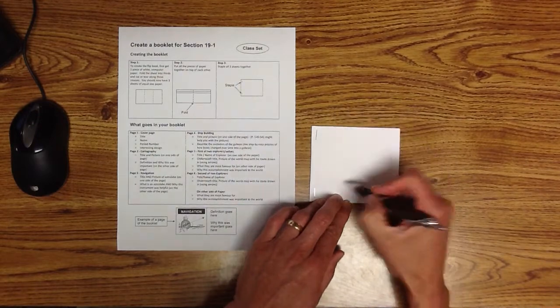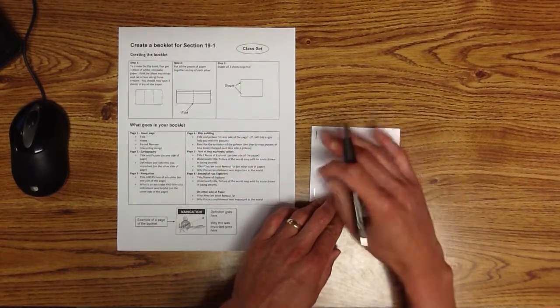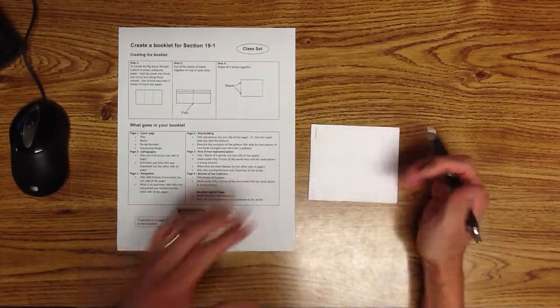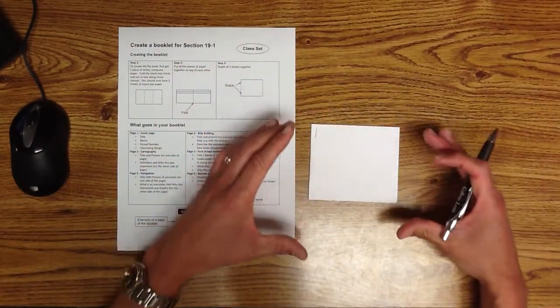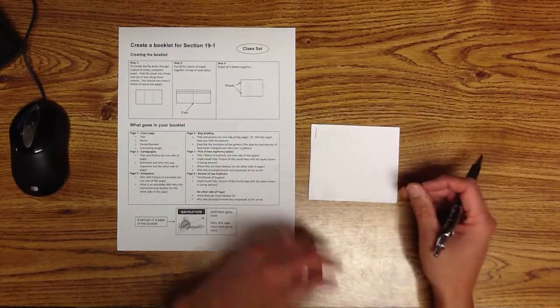Okay, give me some title, your name, period number, draw a picture in here that represents this exploration, a boat, a globe, whatever it is. But design this cover up so it looks nice and neat, use color, all that kind of stuff.